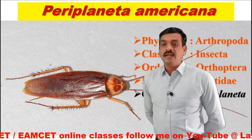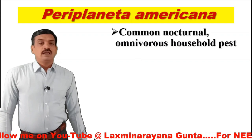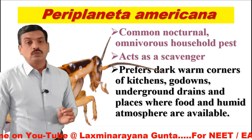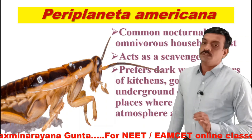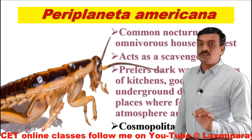They are nocturnal, meaning they are active during night time and rest during day time. Periplaneta americana acts as a scavenger. It prefers dark, warm corners of kitchens, godowns, and places where food and a humid atmosphere are available. Even though they were natives of America, they have been distributed all over the world today — that is why they are cosmopolitan in distribution.